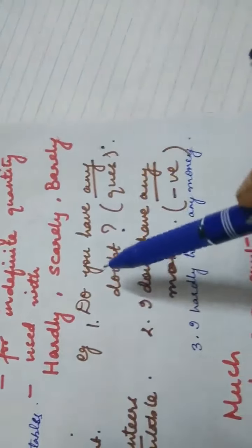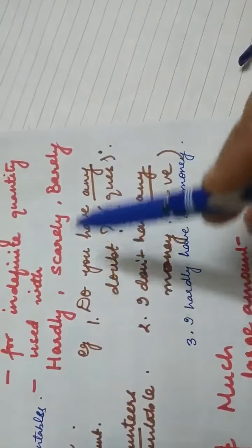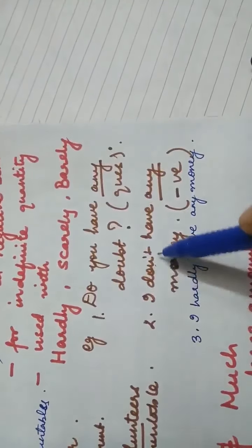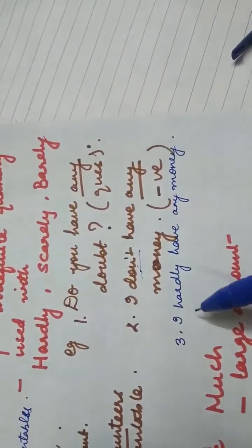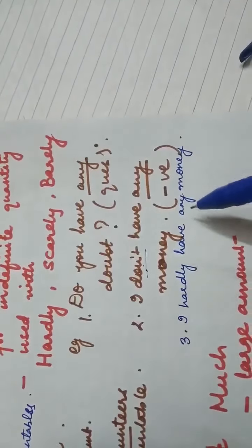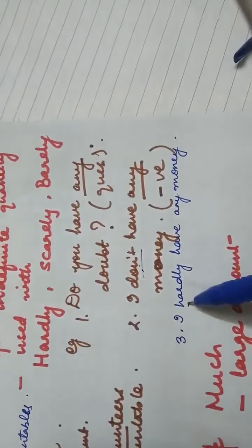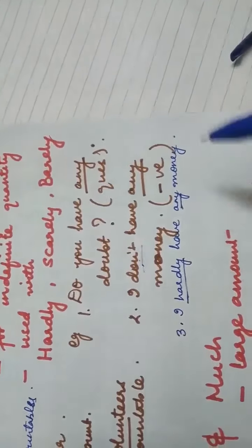Let's look at the examples. 'Do you have any doubt?' — here we are using 'any' in an affirmative way in a question. 'I don't have any money' — here we are using it in a negative way, since we have the word 'don't'. 'I hardly have any money' — as mentioned, with the words 'hardly', 'scarcely', and 'barely', we use the word 'any'.